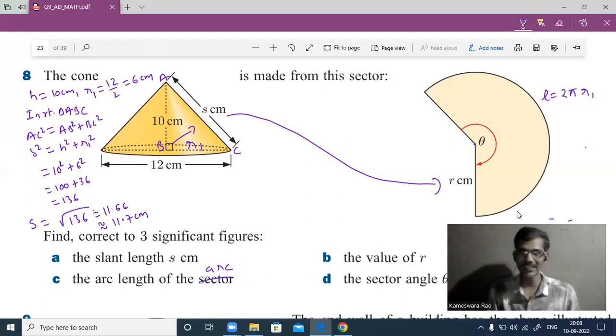The radius of the sector is nothing but the slant height of the cone. So the radius of the sector is 11.7 centimeters.